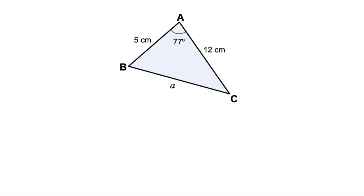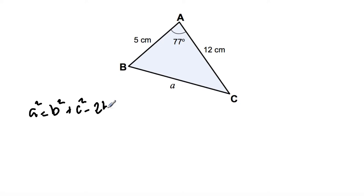The first question asks us to find the length of A. To do this, we're going to use the cosine rule. To apply the cosine rule, we need two sides — in this case, 5 centimetres and 12 centimetres — and we also need an angle, which is 77 degrees. Therefore, we're going to use this equation: A squared is equal to B squared plus C squared minus 2BC cos theta.